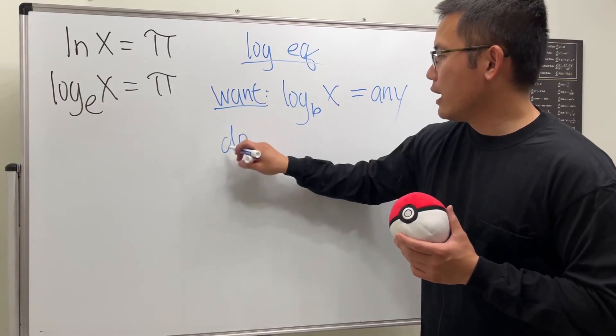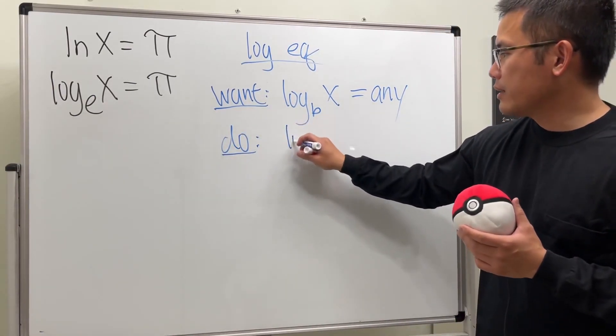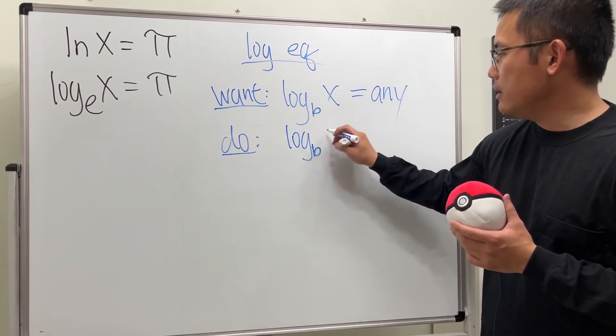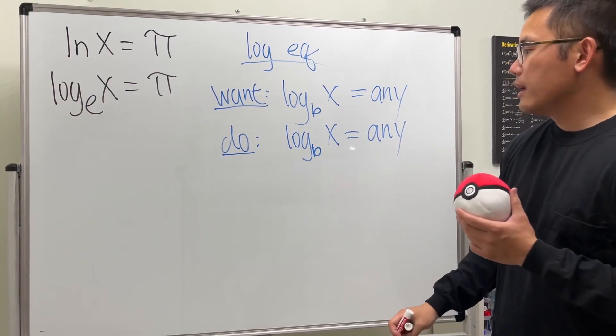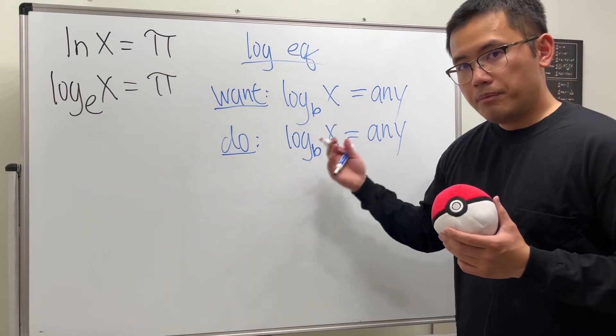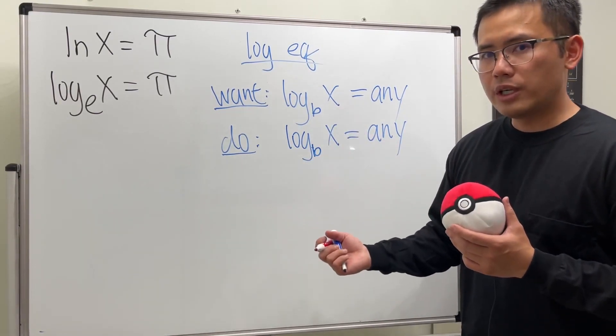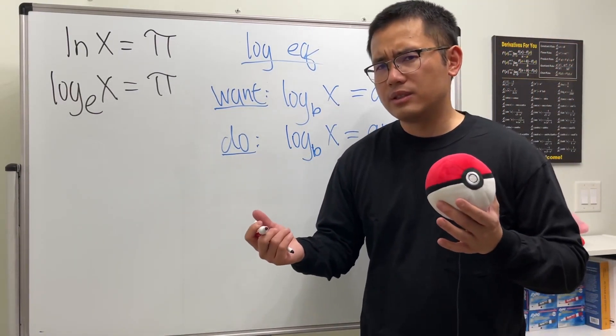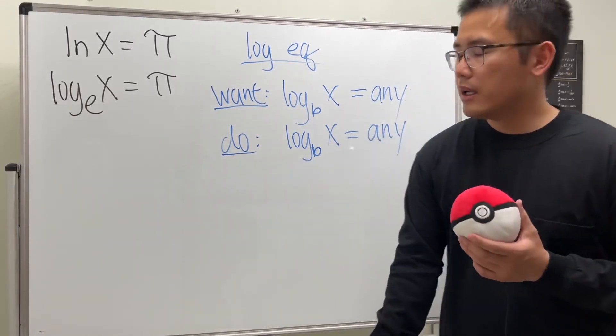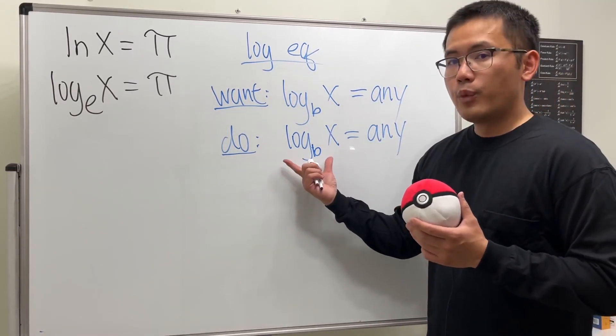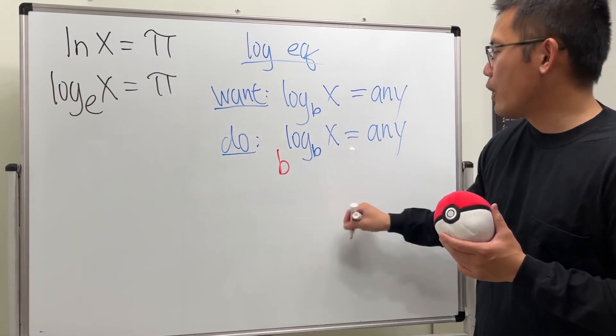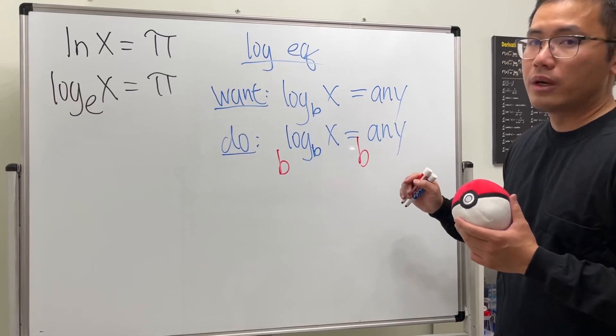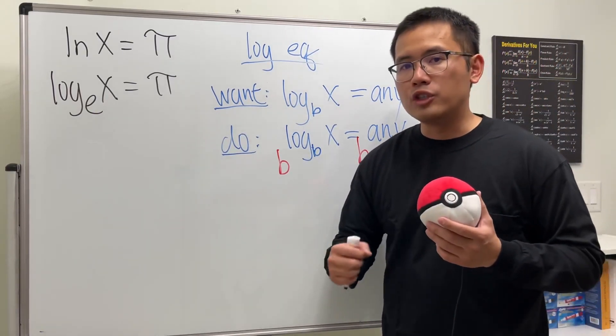Then this is what we are going to do next. Let me write it down again. Log base b of x is equal to whatever the number that we have on the right-hand side. So whenever we have log in the equation, we want to use exponents to get rid of the log. Now, here, we are actually going to pretend that they are the exponents. And then we are going to do b to that power and b to that power. And this step is called the exponentiation.